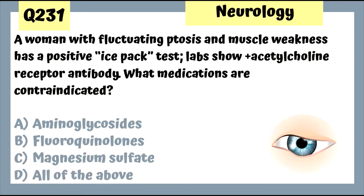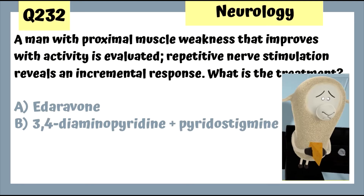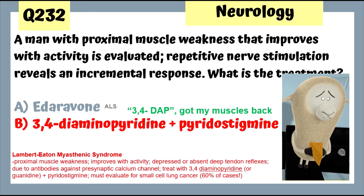Question 231: A woman with fluctuating ptosis, muscle weakness, positive ice pack test, and positive acetylcholine receptor antibody has myasthenia gravis. Several medications are contraindicated in this patient. Important: get a chest CT to evaluate for thymoma, because removing the thymoma resolves symptoms in 70% of cases. Question 232: A man with proximal muscle weakness that improves with activity and incremental response on repetitive nerve stimulation has Lambert-Eaton Myasthenic Syndrome. Treatment is 3,4-DAP; evaluate for small cell lung cancer, which occurs in 60% of cases.